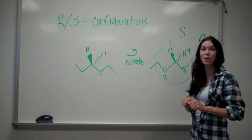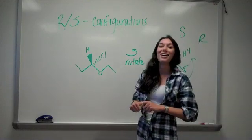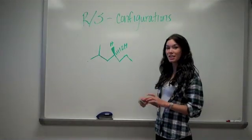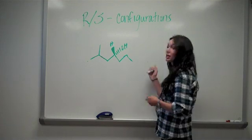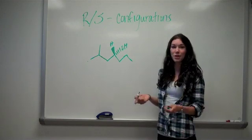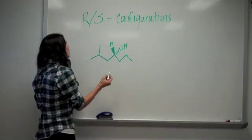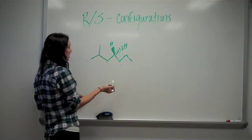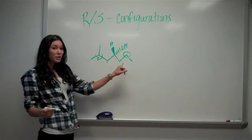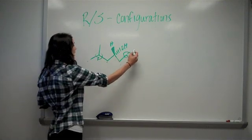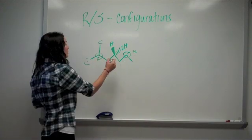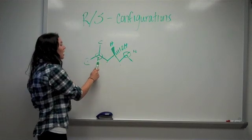So counterclockwise is S and clockwise is R. Sometimes you encounter the problem where your chiral center doesn't have four different atoms attached to it. For example, in this molecule you have a hydrogen, an OH, and two carbons attached. So how do you decide? First, you want to see what these two carbons are attached to. They're both attached to another carbon. But then what are those carbons attached to? This carbon only has a hydrogen, whereas this carbon has two other carbons attached to it. So this carbon attached to the chiral center would have priority over this one.